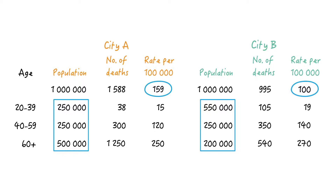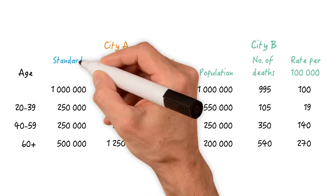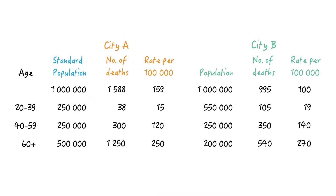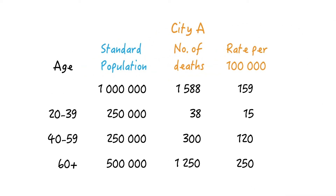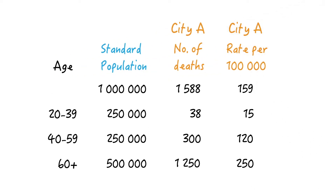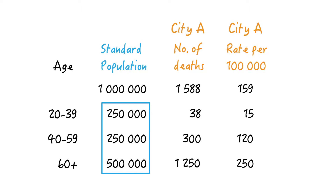So the risk of death is really higher in city B. In order to arrive at rates that are free from age confounding, we could apply the age-specific death rates to a standard population — we could either create a fictitious one or just use one of the two cities. Let's choose city A as our standard population.